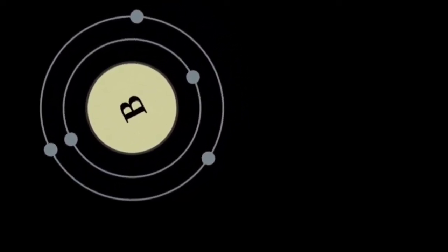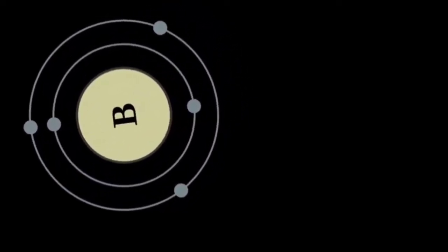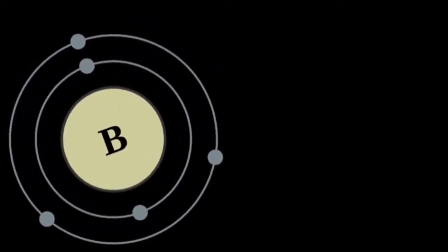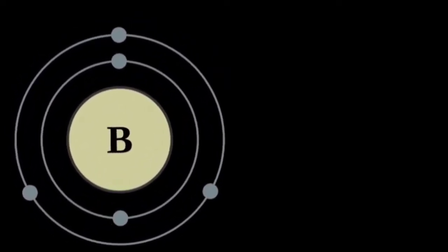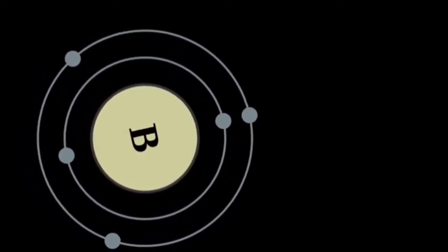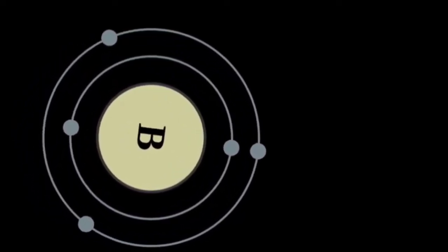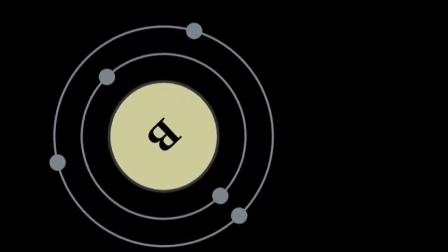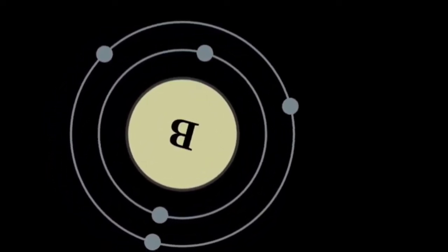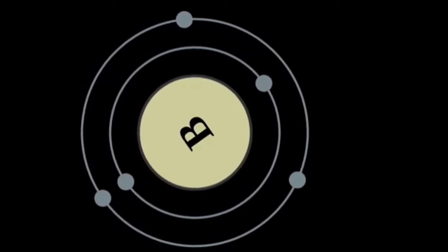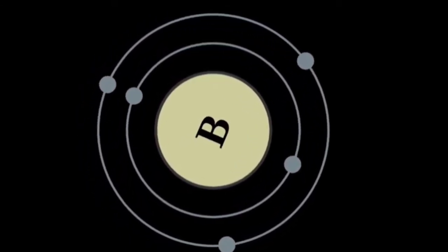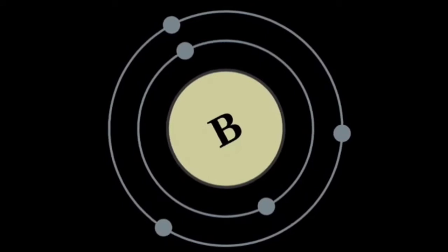The largest known boron deposits are in Turkey, the largest producer of boron minerals. Elemental boron is a metalloid that is found in small amounts in meteoroids, but chemically uncombined boron is not otherwise found naturally on Earth. Industrially, very pure boron is produced with difficulty because of contamination by carbon or other elements.